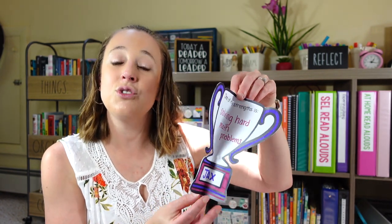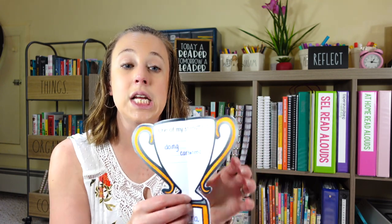Students' favorite part is always the craft or game that goes along with the interactive read aloud. For Jabari Jumps, students create a trophy and on each side they list one of their strengths — they come up with three different ones, color it in, and glue the pieces together. It's a really hands-on, engaging way for them to process what we talked about while reading the book and apply the skill to their own lives.